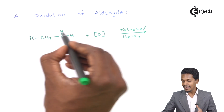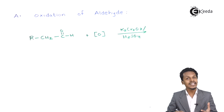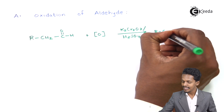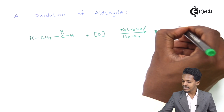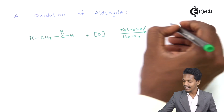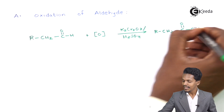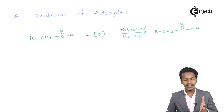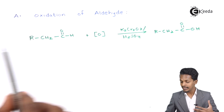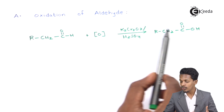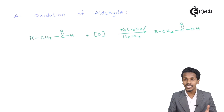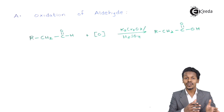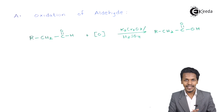When this aldehyde reacts with the nascent oxygen, oxidation takes place. The product we get is RCOOH — a carboxylic acid. Notice there is no change in the number of carbon atoms; the aldehyde is simply converted to a carboxylic acid. This is the general reaction for converting an aldehyde to a carboxylic acid.